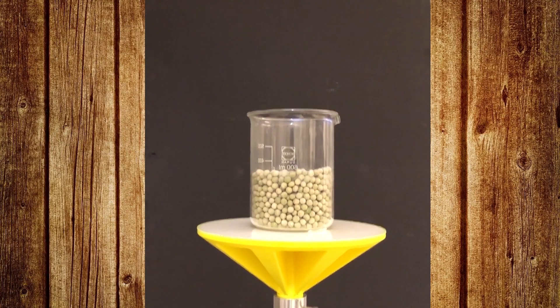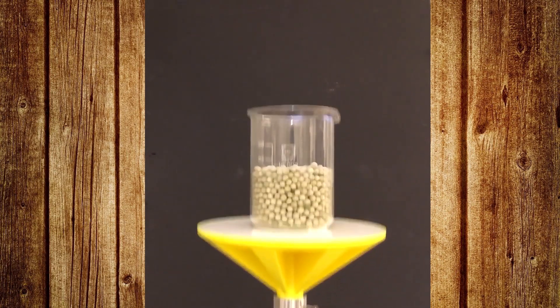Now look at the effect where the particle size difference is not so big. Here peas and butter beans were used. As you look you will see that the bigger butter beans again rise to the top.